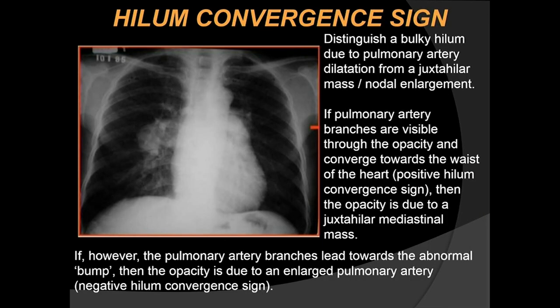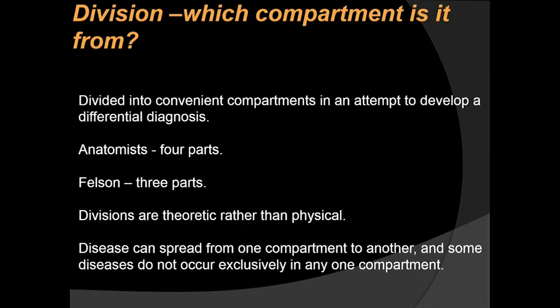This same lesion on CT scan turned out to be a lymphoma in an HIV-positive patient. The hilum convergent sign distinguishes a bulky hilum due to pulmonary artery hyperplasia from a juxtahilar mass or lymph node. If pulmonary artery branches are visible through the opacity and converge towards the waist of the heart, this is a positive hilum convergent sign, suggesting a juxtahilar mediastinal mass. If branches lead toward the abnormal opacity, it is likely an enlarged pulmonary artery — the negative hilum convergent sign.